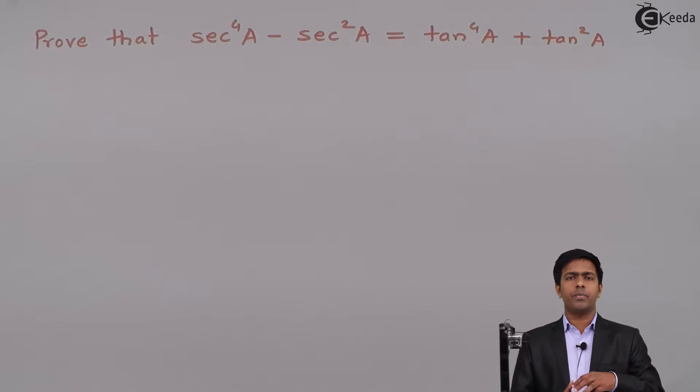So we have to make some adjustment such that sec raised to 4A will get converted into sec square A, and then by doing some adjustment we can convert that tan square A into tan raised to 4A. So let's see how we will do it.